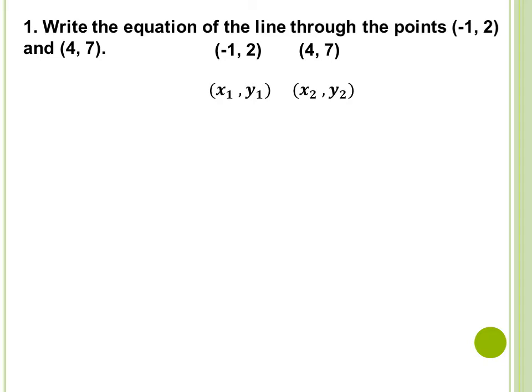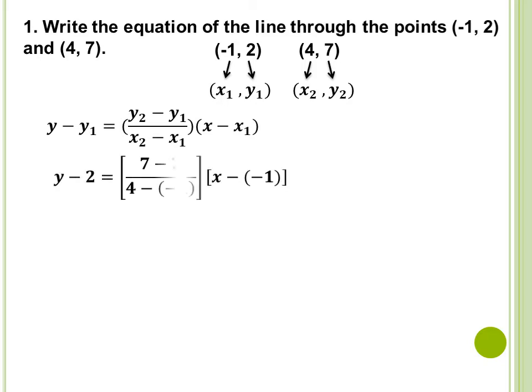Pwede magkabaliktad ang lagay natin dito — yung x sub 1, y sub 1 can be the other point. Hindi naman magkakaiba ng sagot dahil same lang ang makukuha natin. First, write our formula or the two-point form of the equation of a line: y minus y sub 1 is equal to (y sub 2 minus y sub 1) over (x sub 2 minus x sub 1) times (x minus x sub 1). Dahil alam na natin yung values: x sub 1 is negative 1, y sub 1 is positive 2, x sub 2 is 4, y sub 2 is 7, we will just substitute it to the formula.